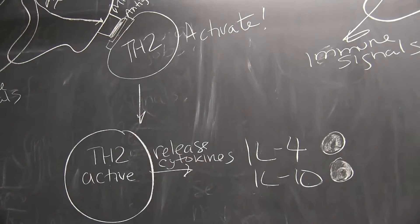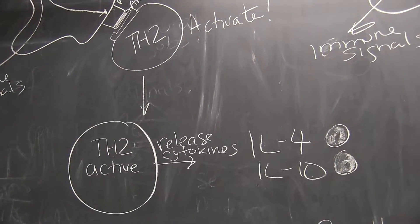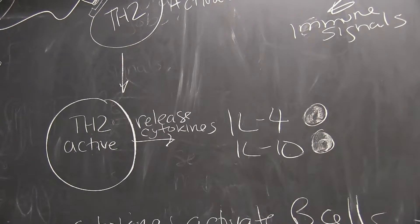Just like in the TH1 pathway, what happens when TH2 gets activated is it's going to divide, but it's also going to release our immune signals called cytokines.